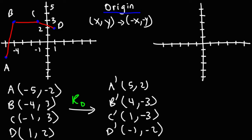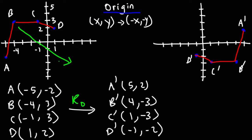Now let's plot the new points: A prime at (5, 2), B prime at (4, -3), C prime at (1, -3), and D prime at (-1, -2). So this is A prime, B prime, C prime, D prime. B and C were reflected from quadrant 2 to quadrant 4, A was reflected from quadrant 3 to quadrant 1, and D was reflected from quadrant 1 to quadrant 3.